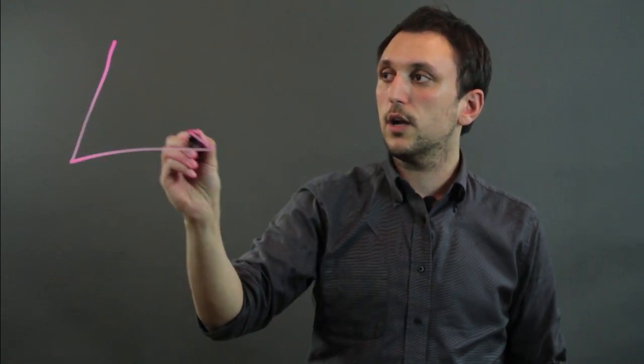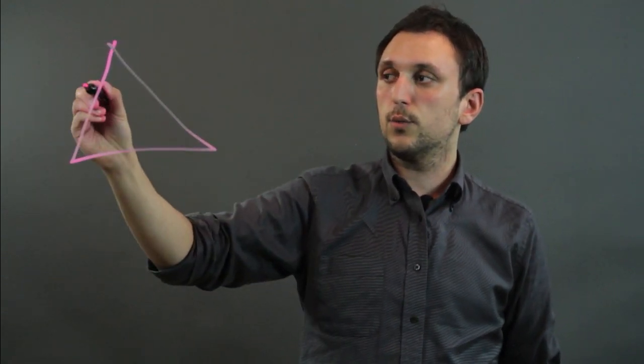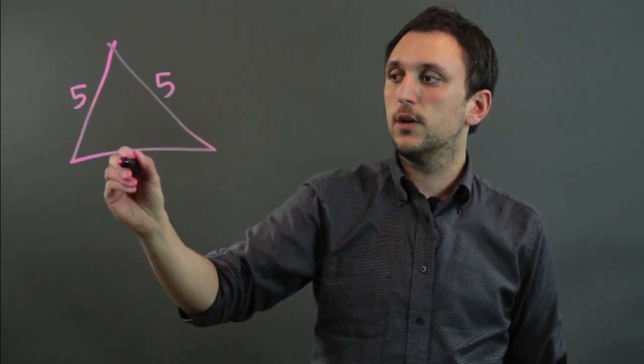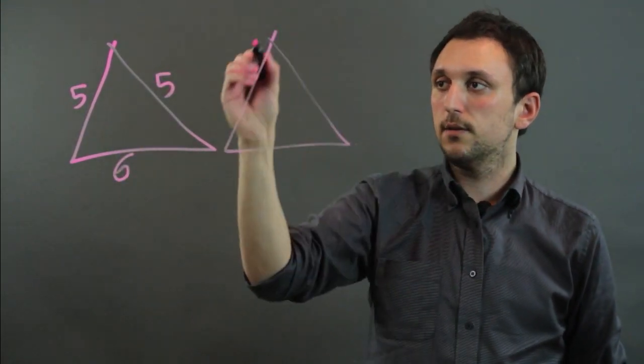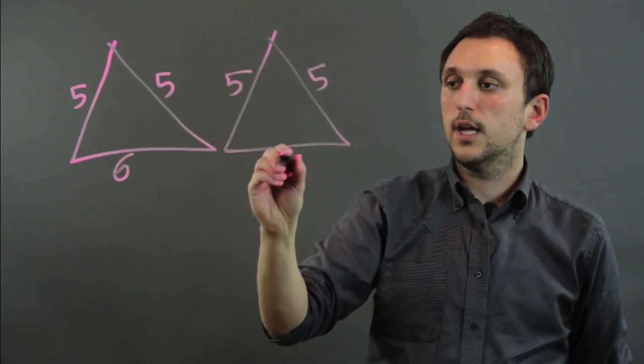Now, for triangles to be congruent, all the sides have to be equal. So the thing about two isosceles triangles is, let's say we have this where this is five and this is five, but this is six, and then we have again five, five, and six.